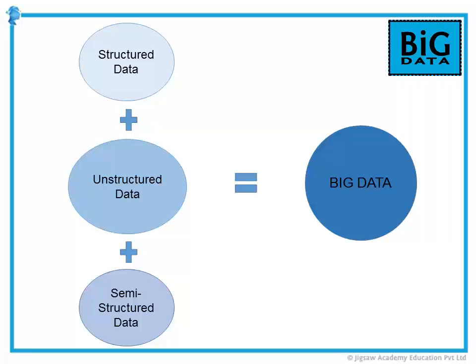Sources can be internal or external, but they usually provide three kinds of data: structured data, unstructured data, and semi-structured data. It's when all three come together that we can actually visualize what big data is. Typically, unstructured data is larger in volume than structured and semi-structured data.